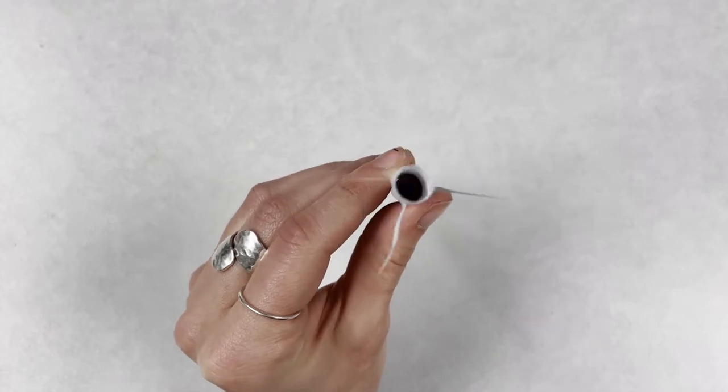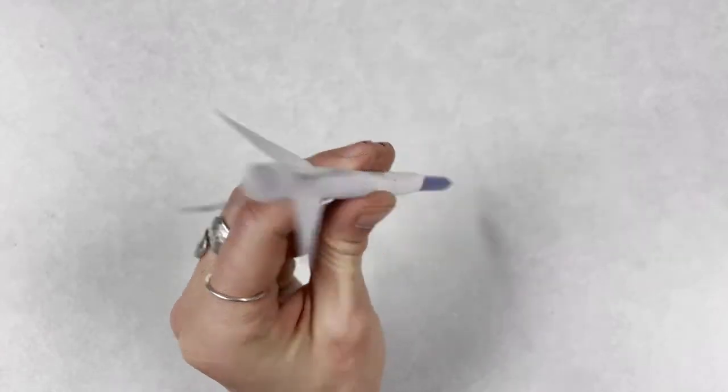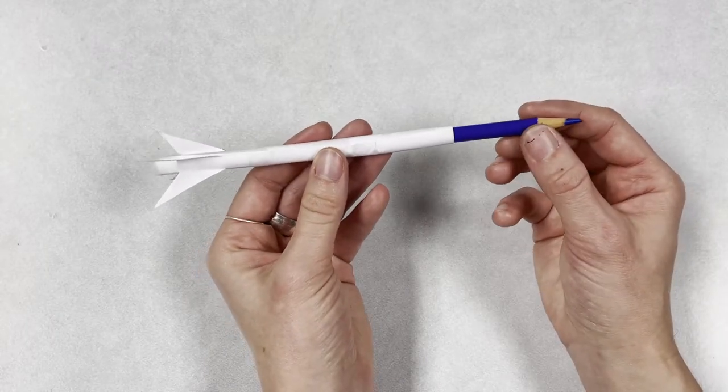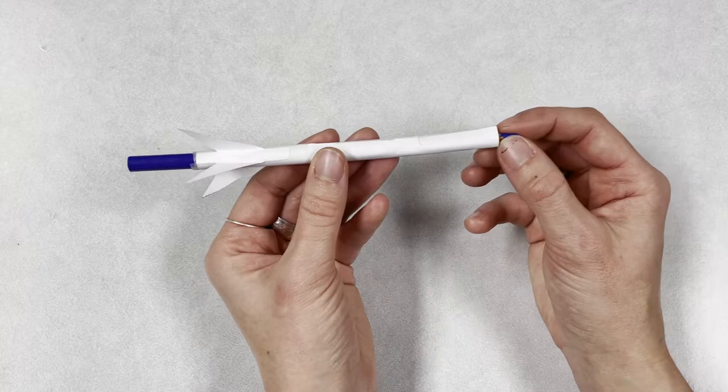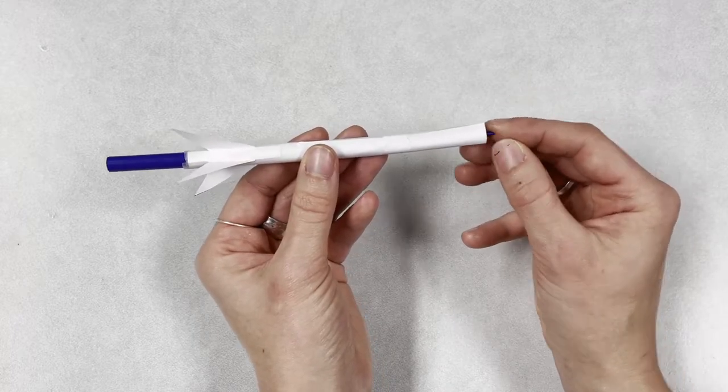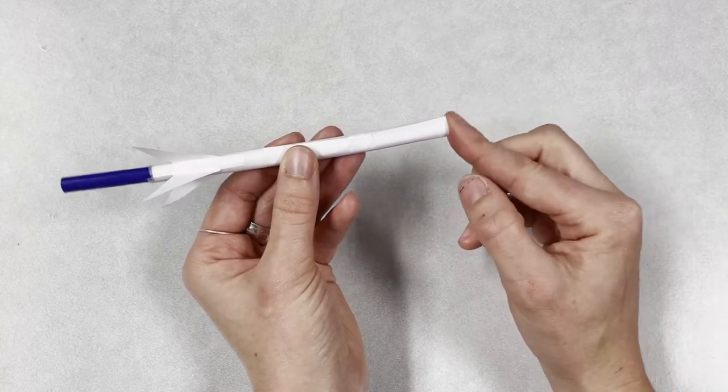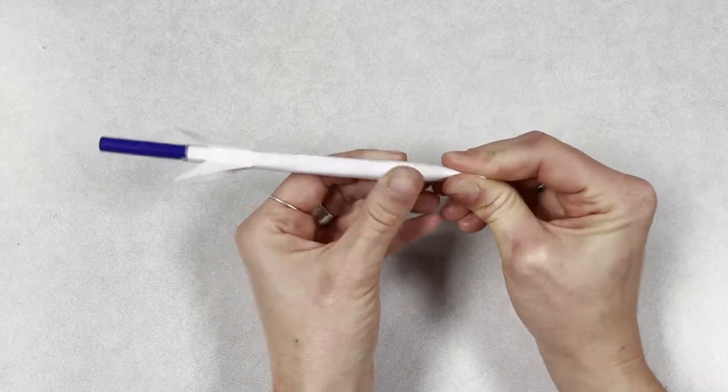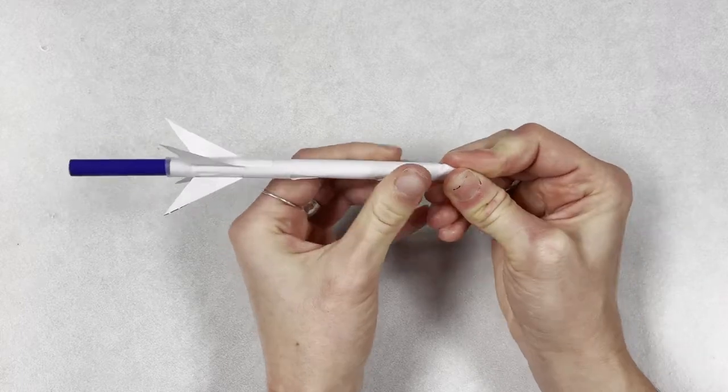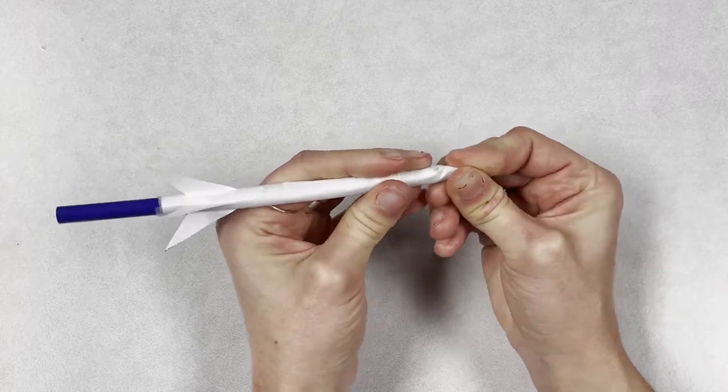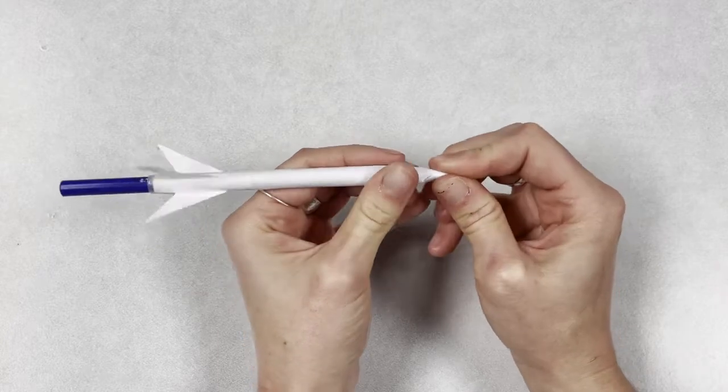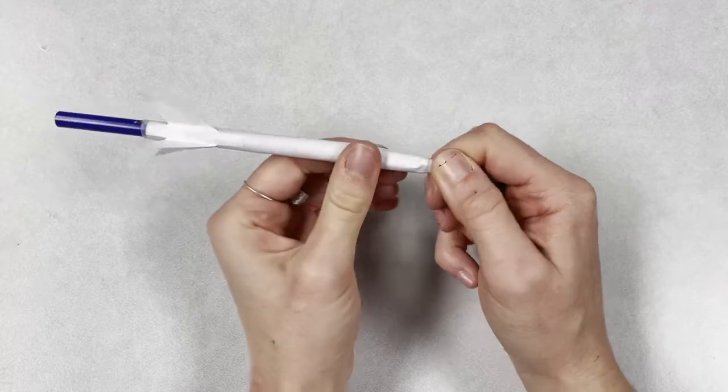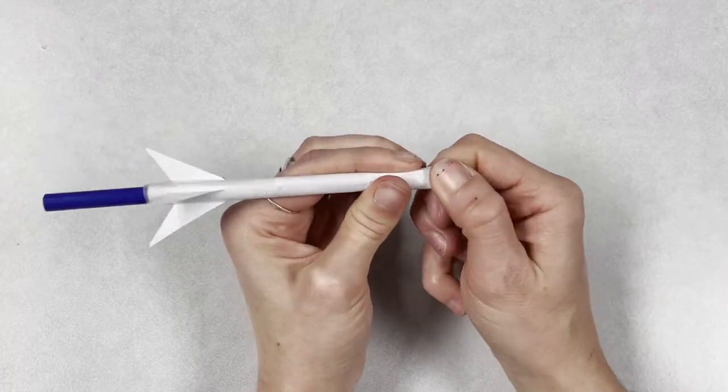Once your fins are arranged, we can create the nose cone or the pointy part of the rocket. I'm just sliding my paper tube up along the end of my pencil until I've covered up the tip with the tube. And now I'm going to pinch and twist the paper so that it looks like it's in the shape of a sharpened pencil.